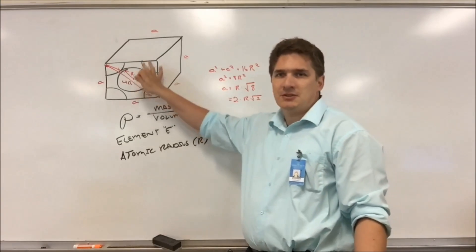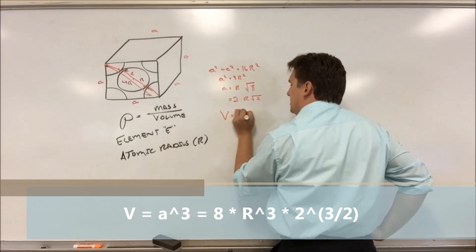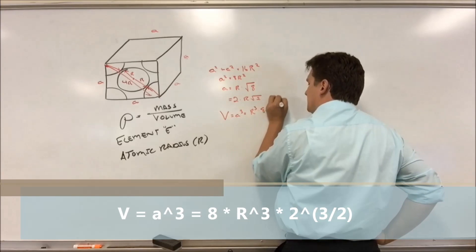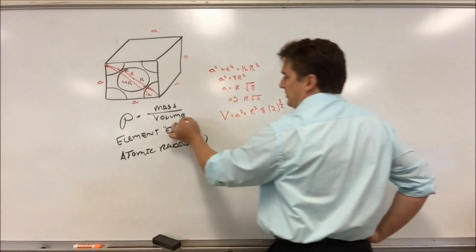Now, the volume of this cube here is going to be A cubed. So volume is A cubed, which equals R cubed times 8 times 2 to the 3 halves. So we've got one term here, the volume.